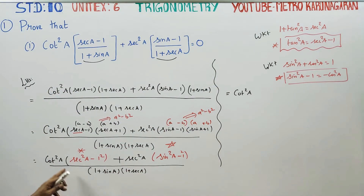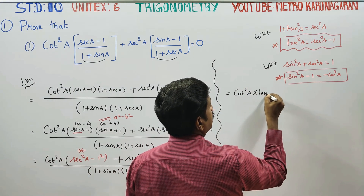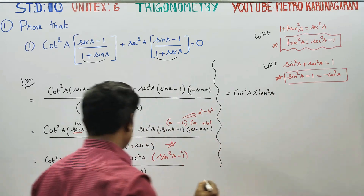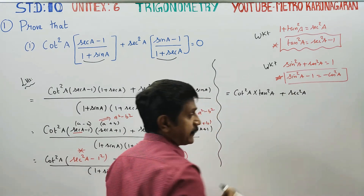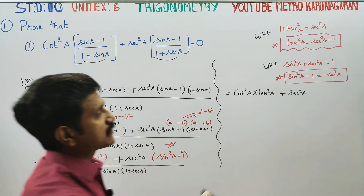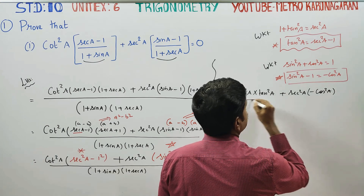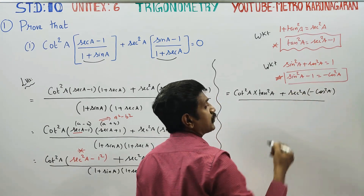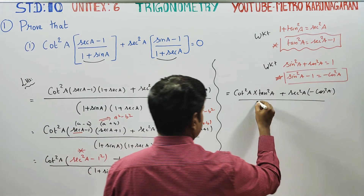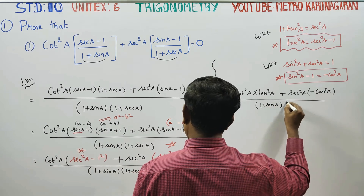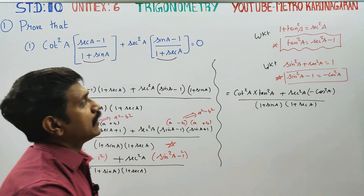From the side note: cos squared theta is equal to secant squared theta minus 1. Applying this with 1 plus sin A into 1 plus secant A — that's the formula we use here.